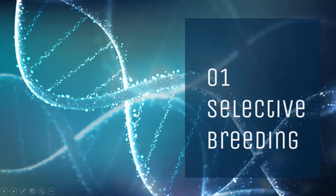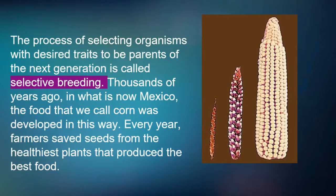Let's start with selective breeding. The process of selecting organisms with desired traits to be parents of the next generation is called selective breeding. Thousands of years ago, in what is now Mexico, the food that we call corn was developed in this way. Every year, farmers save seeds from the healthiest plants that produce the best food.